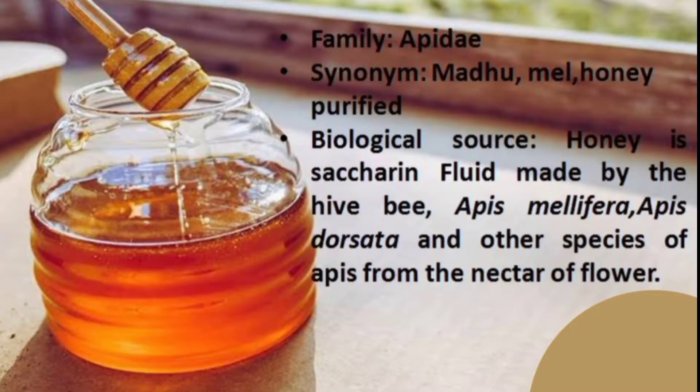If you say honey belongs to a family, you can tell us the family. Because Apis mellifera and Apis dorsatan are the zoological names of bees. The name of that bee's family is Apidae — that is what we call the honey family.